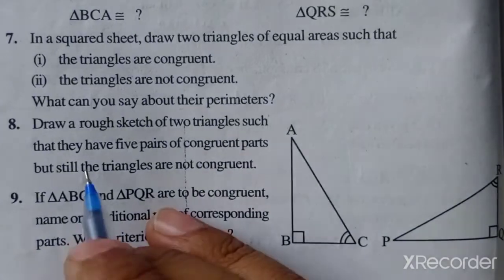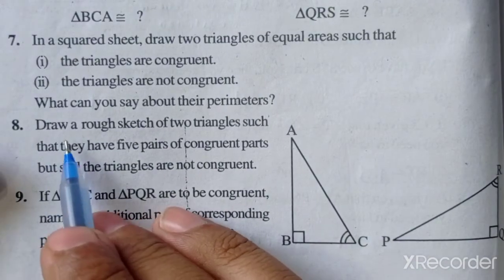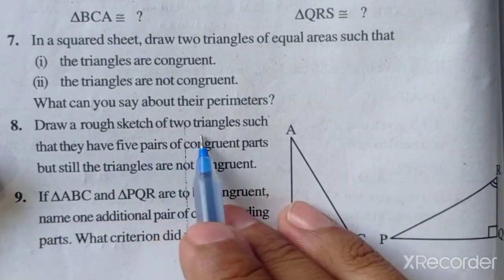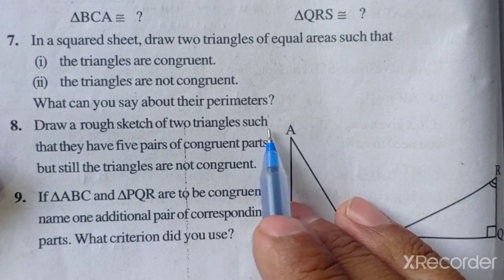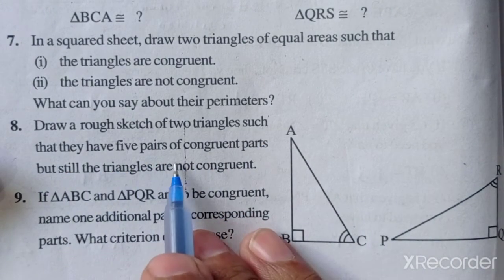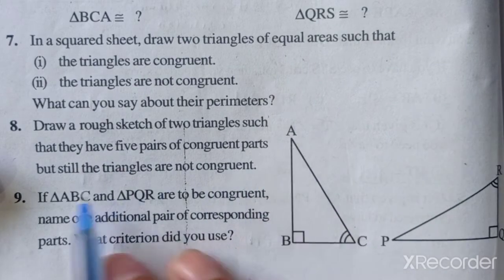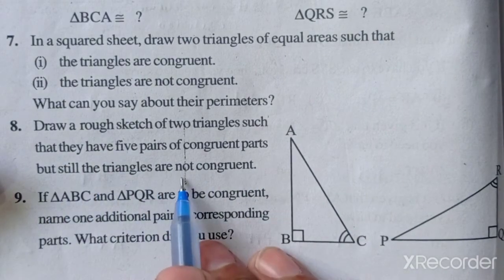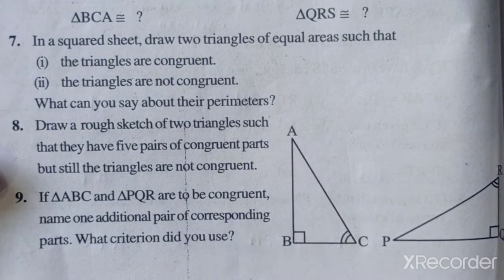Now our next question, question number 8: Draw a rough sketch of two triangles such that they have five pairs of congruent parts but still the triangles are not congruent.